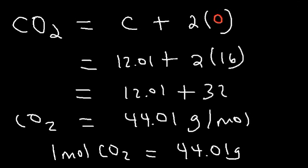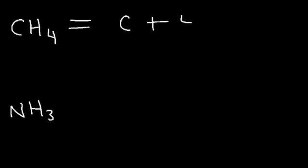Molar mass is the mass of one mole of a substance. Let's try some more examples. Go ahead and calculate the molar mass for methane, CH4, and ammonia, NH3. So in methane, we have one carbon and four hydrogen atoms.